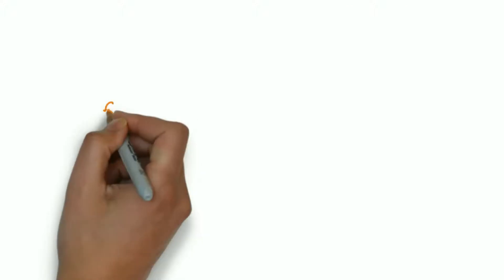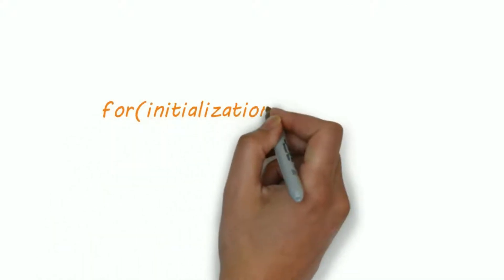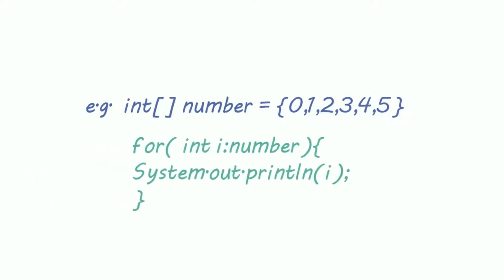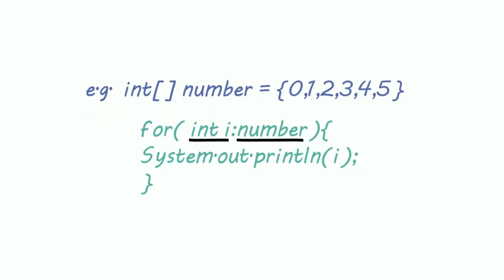For each is used to iterate containers like arrays and other data structures. So syntax is easy: first the keyword for, then initialization, colon, and then the name of the container. We will use for each loop to print this array. So first our keyword for, then initialization, that is integer i, colon, and name of our container, that is number.